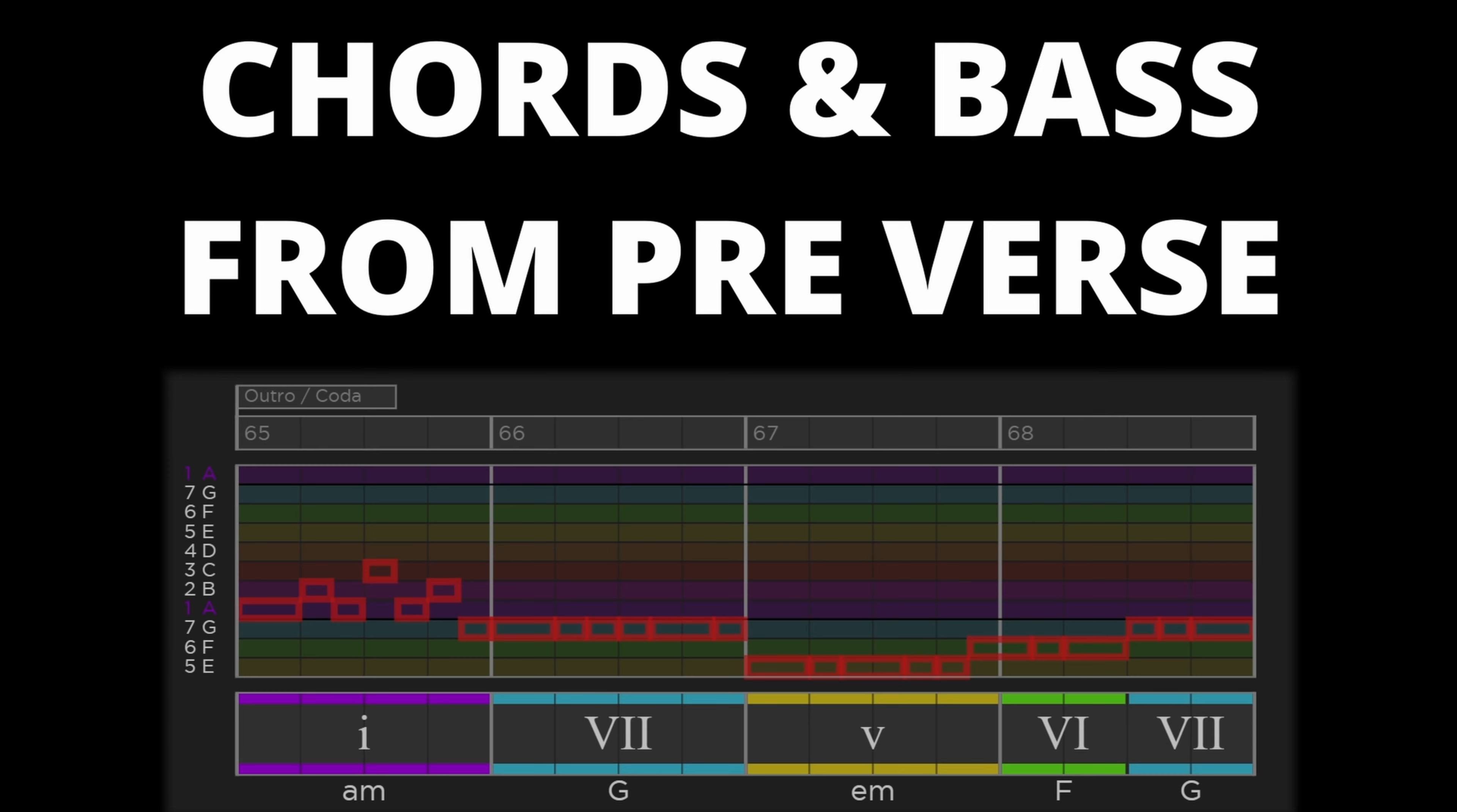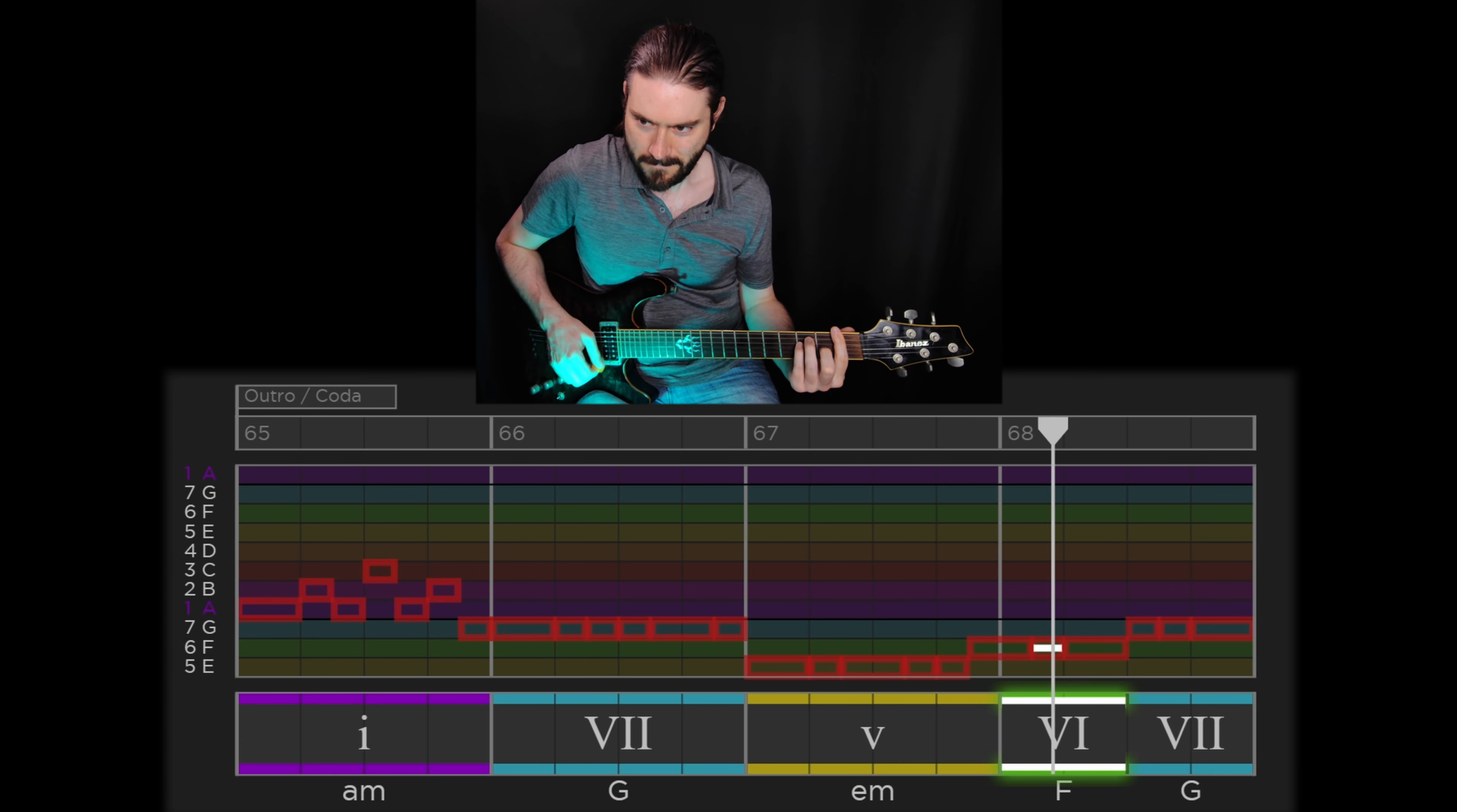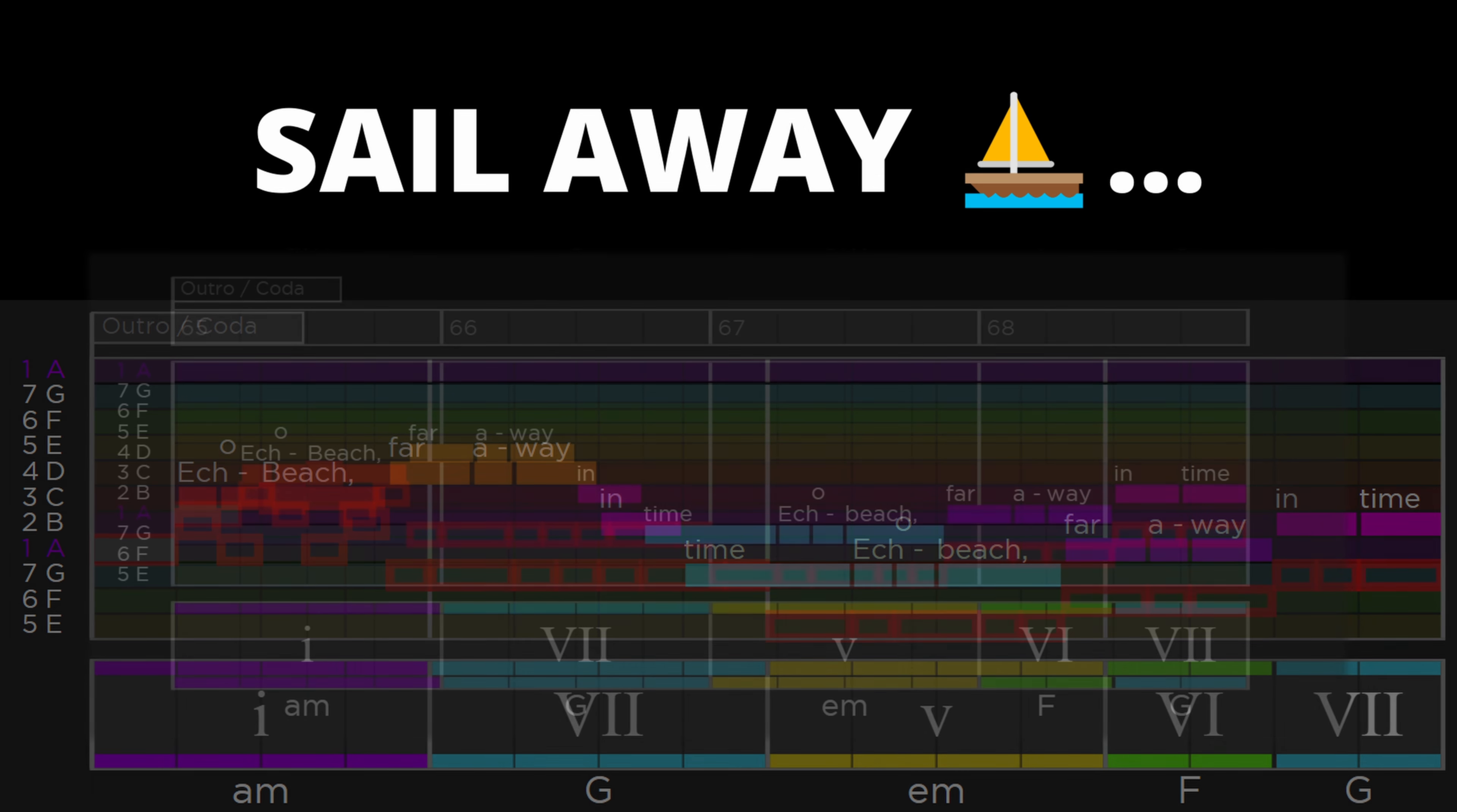Then we get to the outro slash coda slash refrain. Mark Gane even referred to this as the true chorus of the song. This lasts for about the last minute of the song. It uses the chords and bass from the pre-verse at the beginning. The vocals repeat the refrain echo beach far away in time. This adds to the nostalgic feel of the song as if echo beach is a mystical place in time that was better than the present. The melody has a nice wistful feel here.